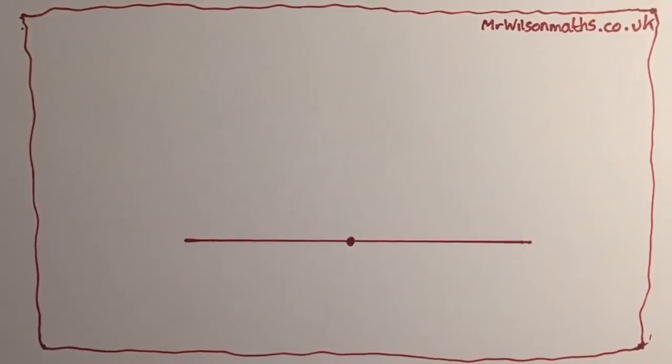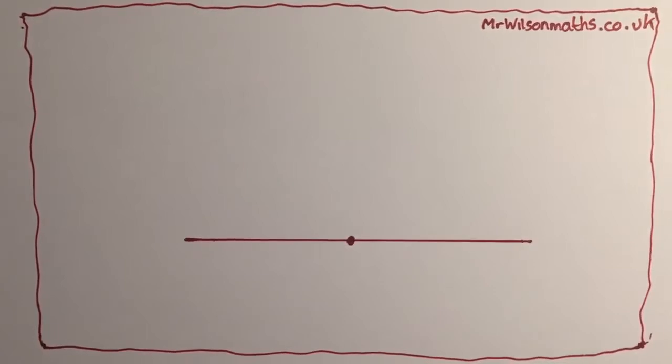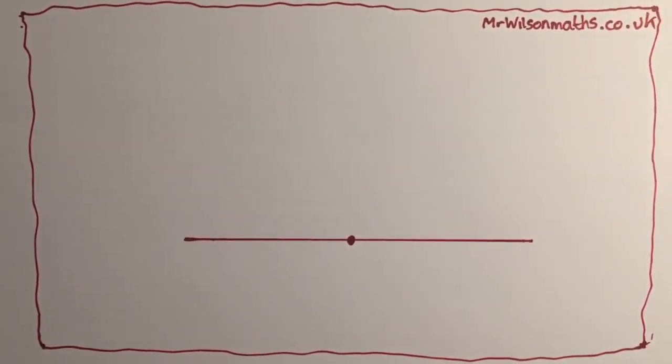So they say that the internal angles of the triangle add up to 180 degrees. Let's see why they say that.